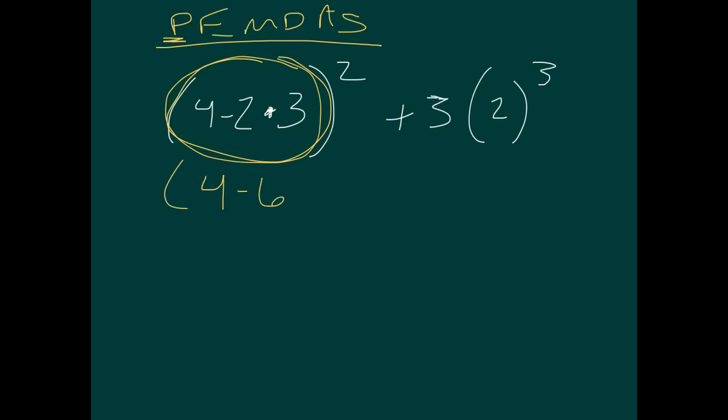4 minus 6 squared plus 3. Can we simplify this any? No. 2 is chill just like he is. All right, and then we've still got something in parentheses. 4 minus 6 is negative 2 squared plus 3. In parentheses, 2 to the third. Now, we've simplified all of our parentheses as much as we can, so that little guy's done.